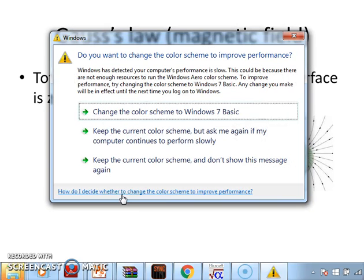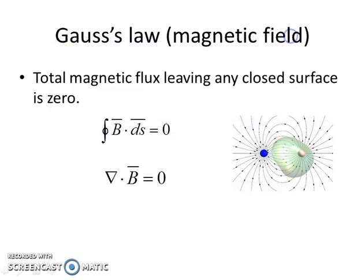The second law is Gauss's law for the magnetic field, which states that the total magnetic flux leaving any closed surface is zero. This means the magnetic monopole does not exist — while we have electric charges or electric monopoles, we have never found the magnetic equivalent. This equation states that the magnetic field tends to wrap around things since the divergence is zero, and the field tends to form closed loops.